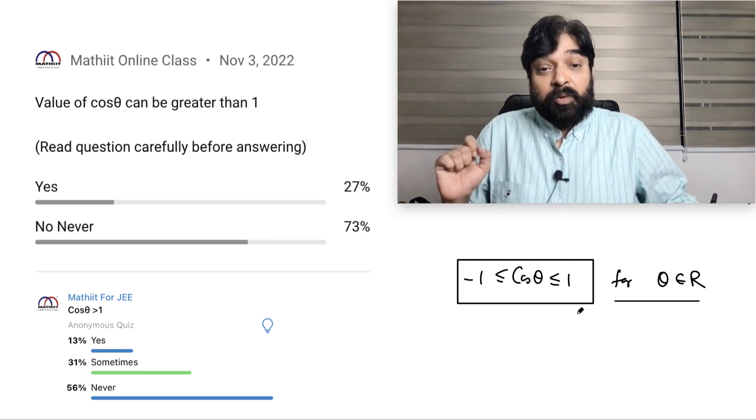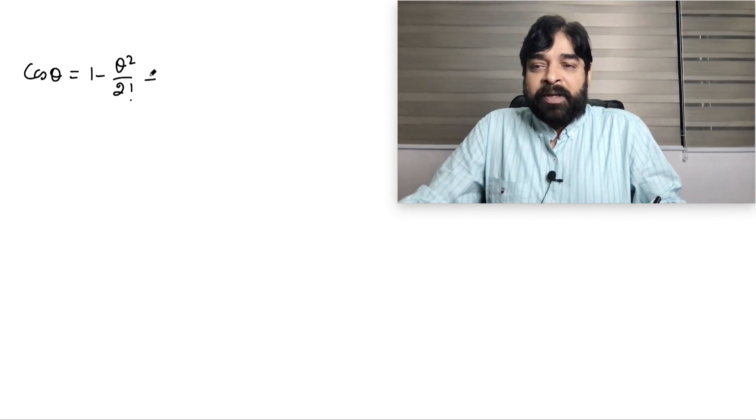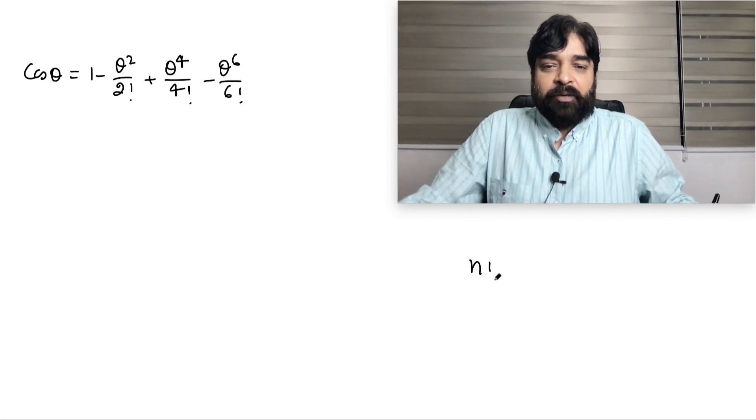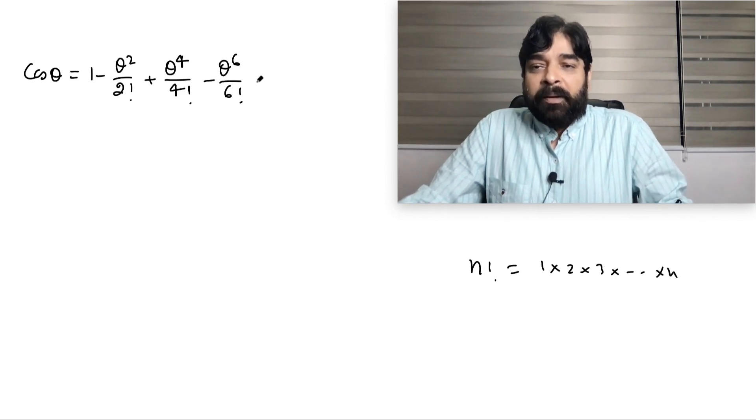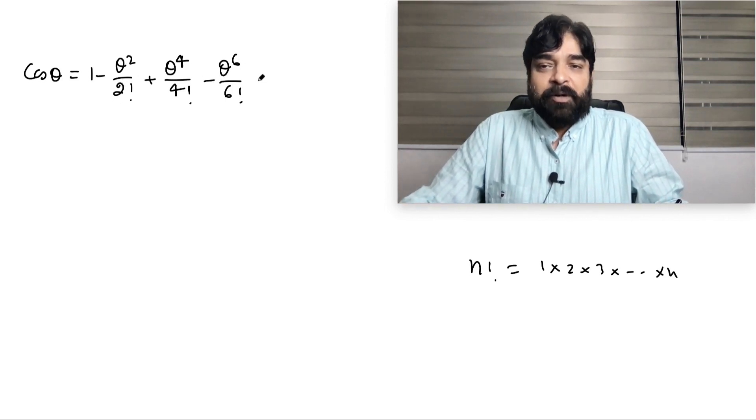When is cos θ greater than 1? Let's try to prove this. To understand the proof, we should understand the cos θ value. Cos θ always equals 1 minus θ² / 2! plus θ⁴ / 4! minus θ⁶ / 6!. Factorial I guess all of you know: n! is nothing but 1 × 2 × 3 up to n, right?